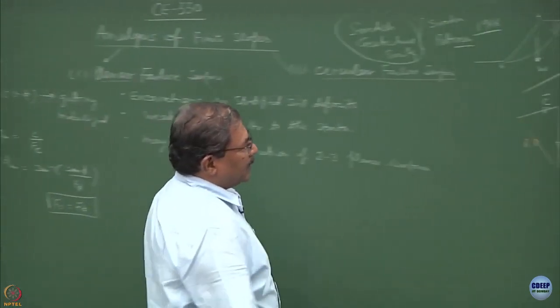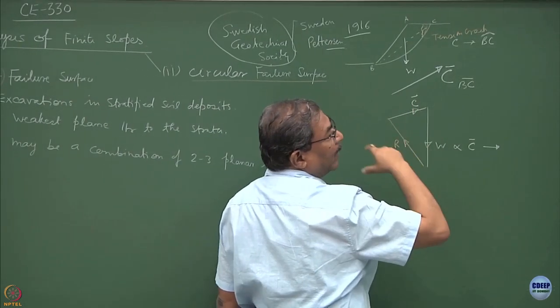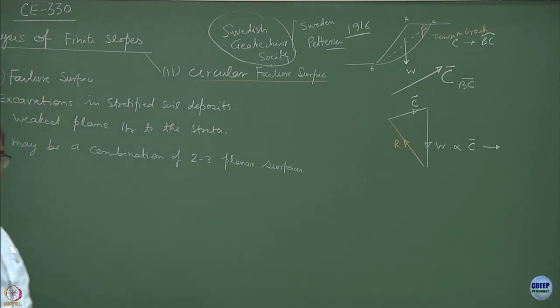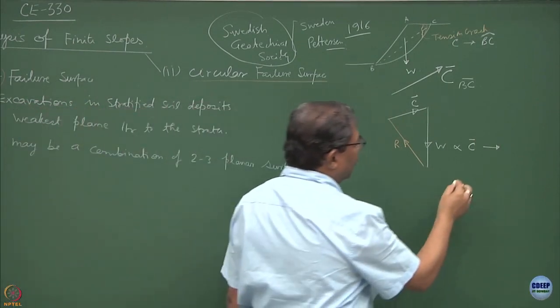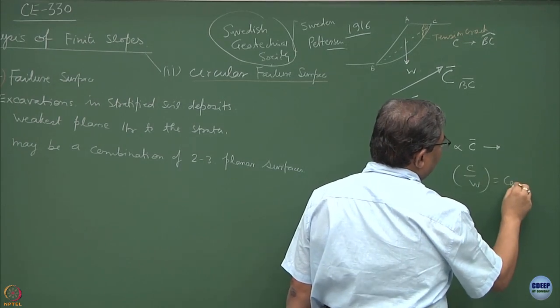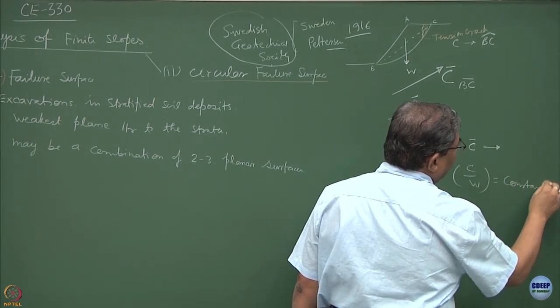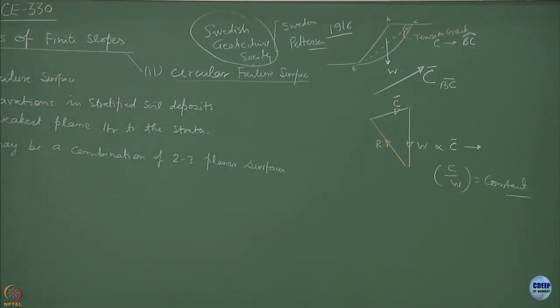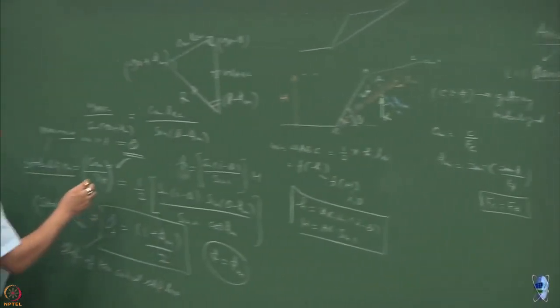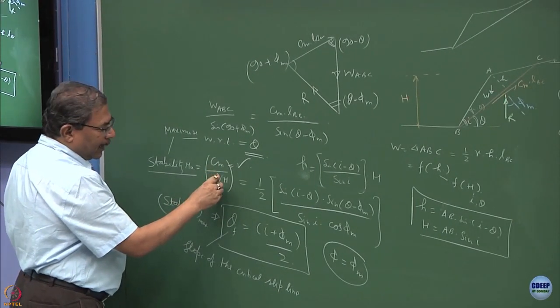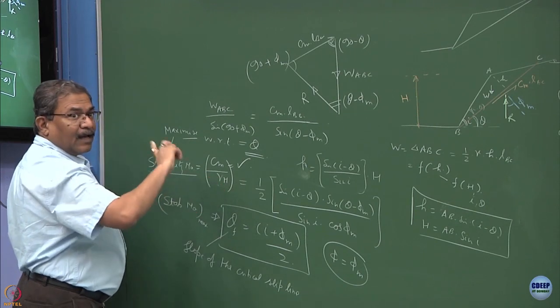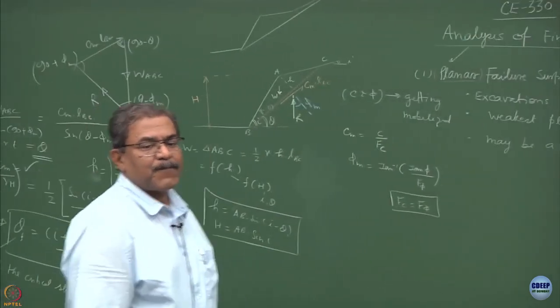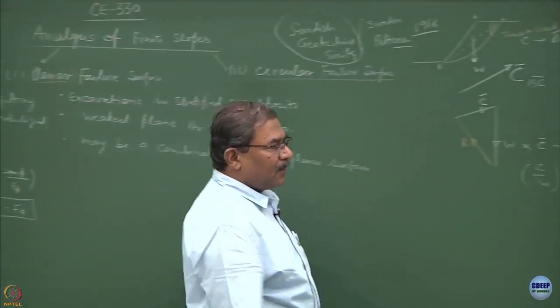A smaller the weight, a smaller amount of cohesion is required or gets mobilized to stabilize the whole thing. So C upon W is a term which remains a constant. Any idea why we are using the term C upon W? Stability number is defined as C over gamma H. Gamma H is associated with the weight of the destabilized block.